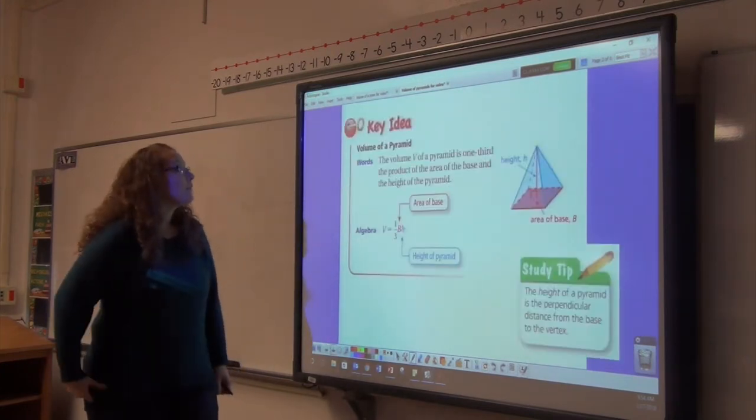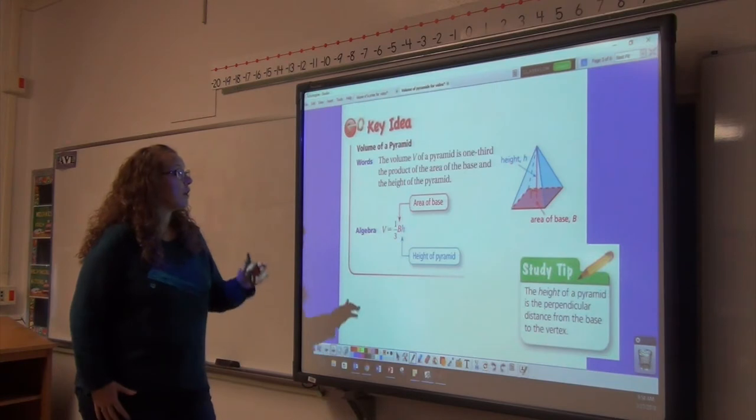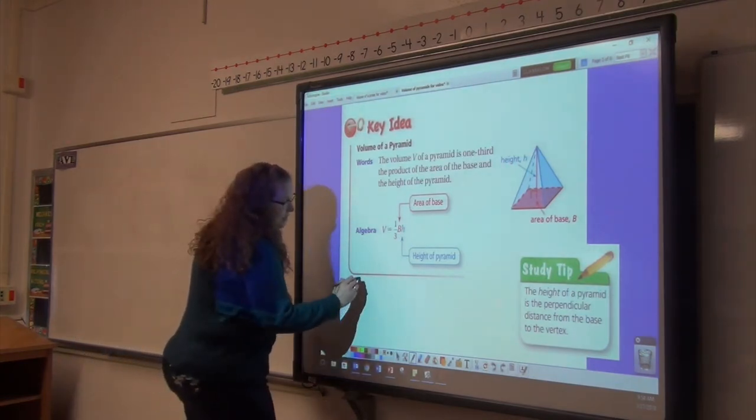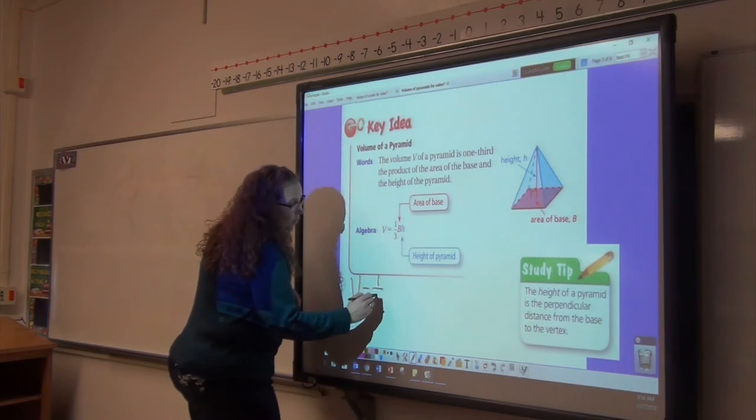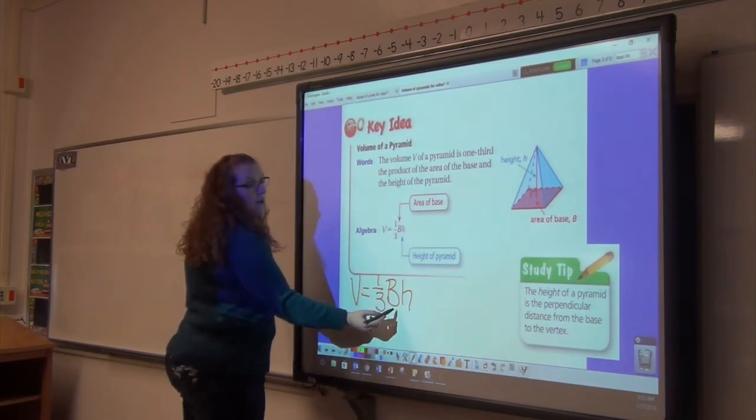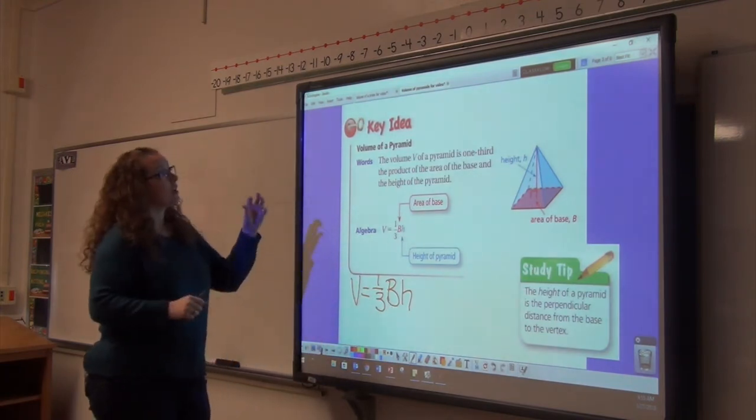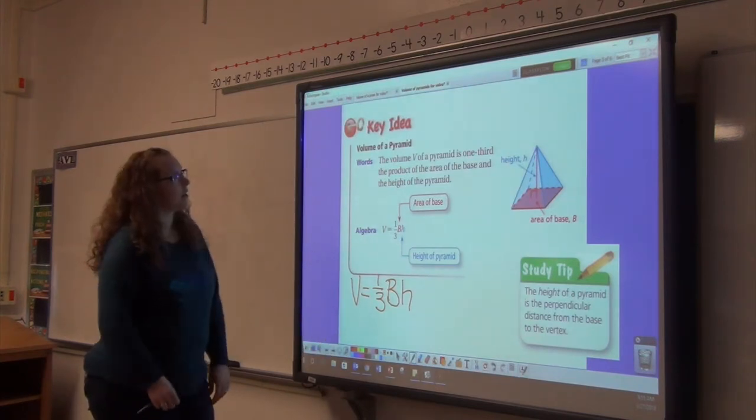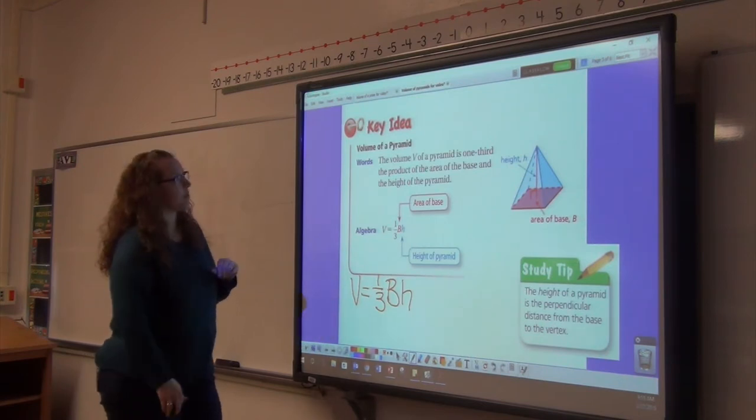Which is where our formula for the volume of a pyramid comes from. I'll write this a little bit larger so you can see it. Volume equals one third times the area of the base times height. This is area of the base, if you'll remember from our last volume videos about rectangular prisms and other hexagonal prisms.